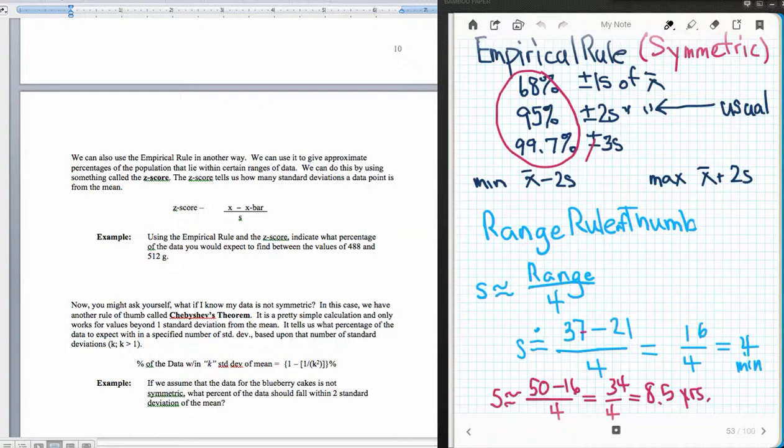And we can expect our minimum value to be two standard deviations lower, and our expected maximum value to be two standard deviations above. And Triola uses the word usual to describe this range of data.